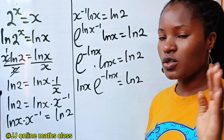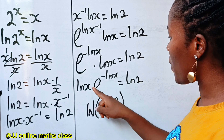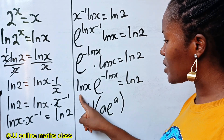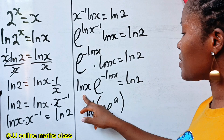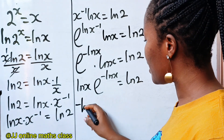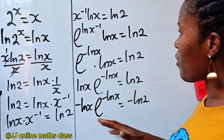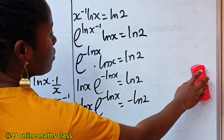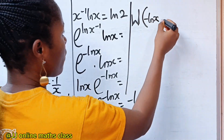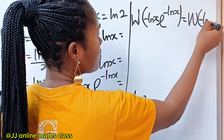Now, remember what we said: when you apply the Lambert W function, it must be in the form a·e^a. Notice that we have ln(x) and minus ln(x), but this ln(x) in the exponent has a negative sign. So both must match with a negative sign. That means I need to multiply both sides by minus 1. So I have: minus ln(x)·e to the power of minus ln(x) is equal to minus ln2. Now I can apply the Lambert W function to both sides: W(minus ln(x)·e^(minus ln(x))) equals W(minus ln2), giving us minus ln(x) equals W(minus ln2).